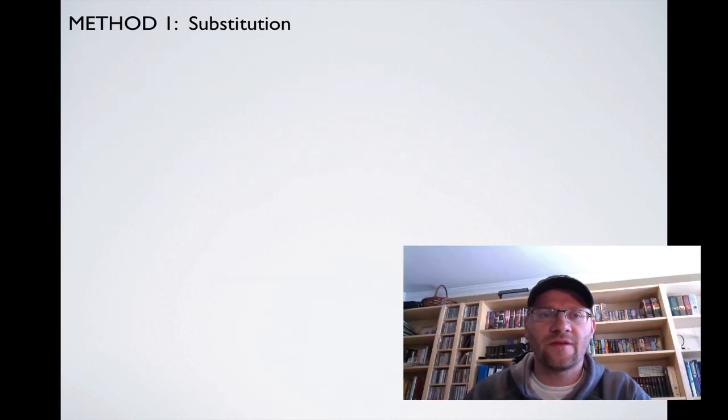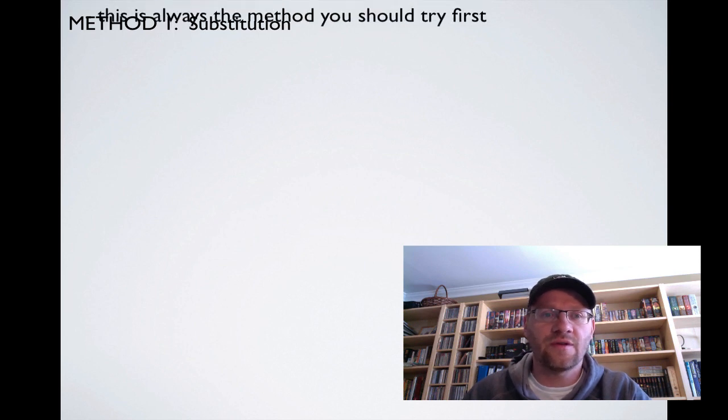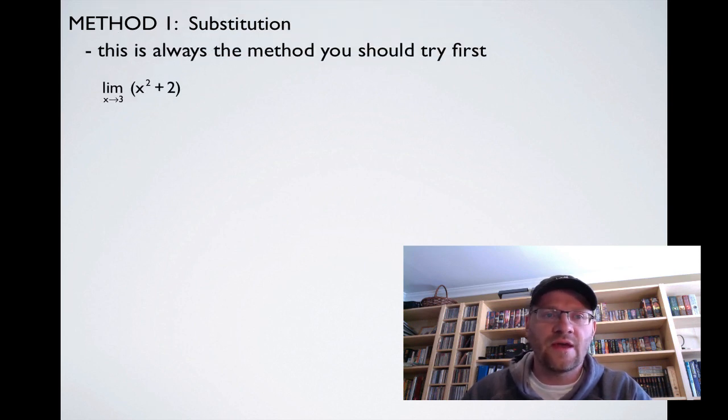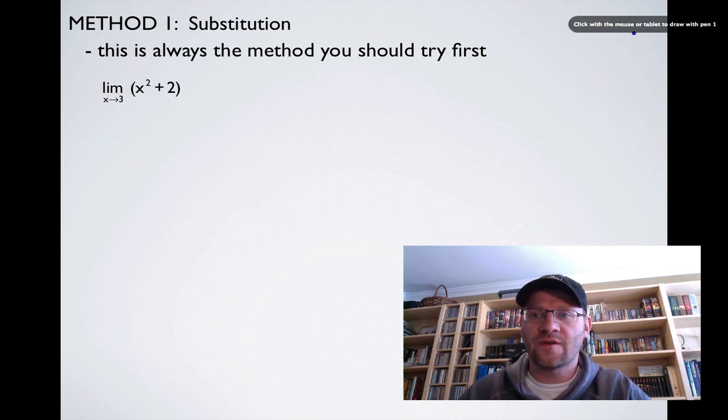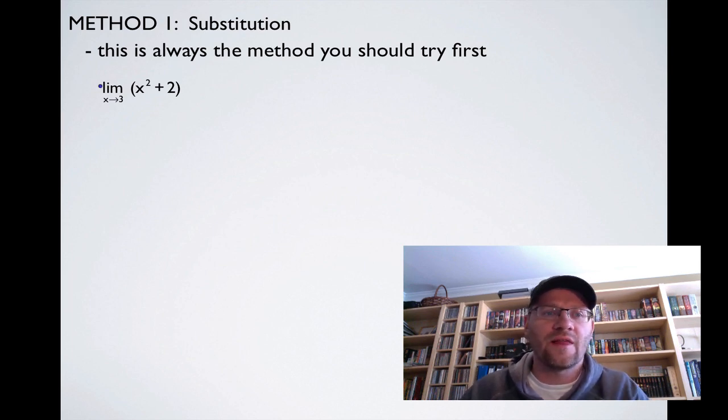Our first method is the simplest method, and that's called substitution. This is always a method you should try first. It's just plain old substitution, so if we're wondering the limit as x approaches 3 for this function, we can simply just plug 3 into this function. So that becomes 3 squared plus 2, and we end up with 9 plus 2, so the limit is 11. That just means on a graph of a quadratic function, as x approaches 3, the height of the graph is approaching 11.